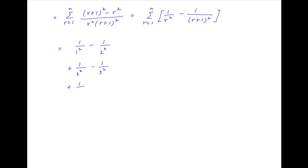Putting r = 3, we get the third term: 1/3² minus 1/4², and so on. Putting r = n, we get the nth term: 1/n² minus 1/(n + 1)².